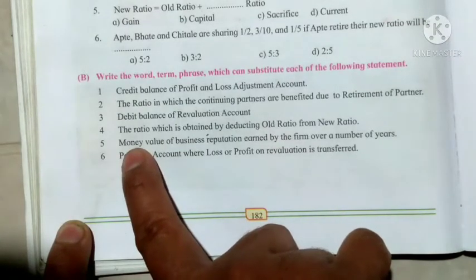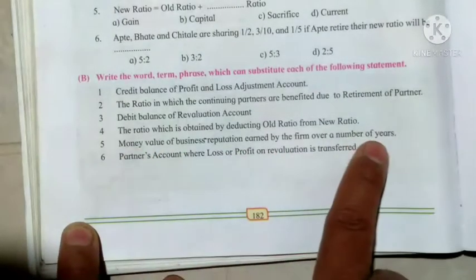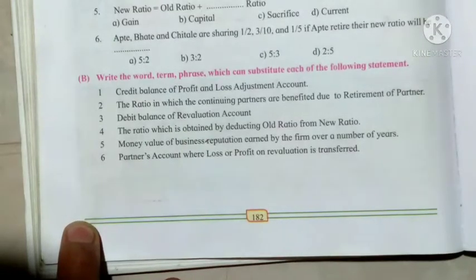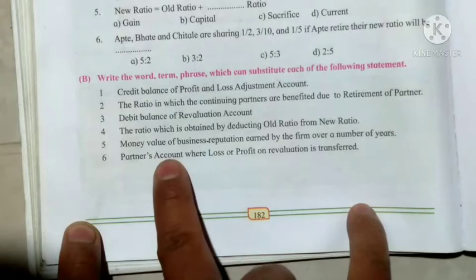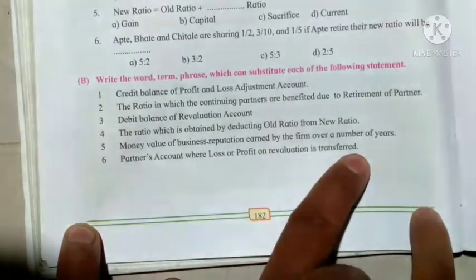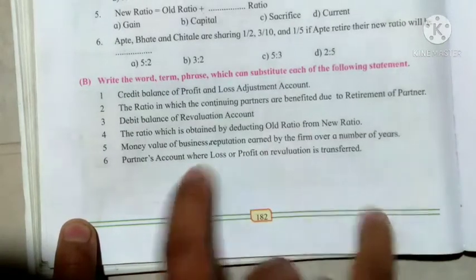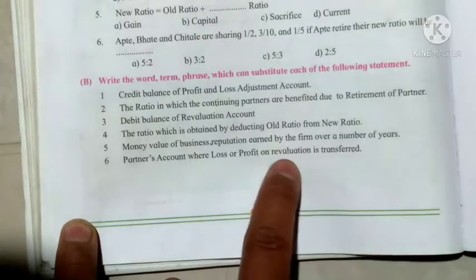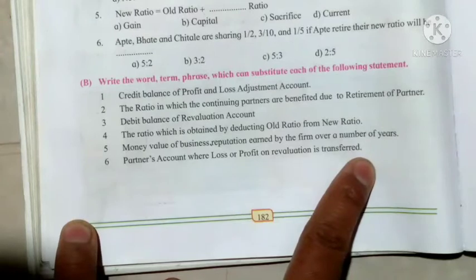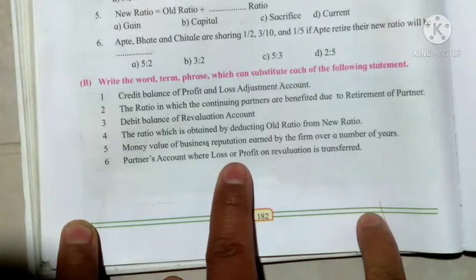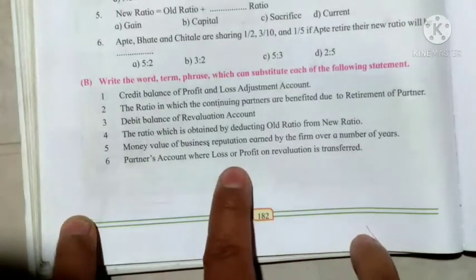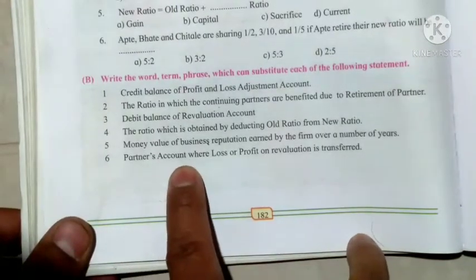Number 3: money value of the firm or money value of business is called goodwill. Number 4: the account where loss or profit on revaluation is transferred is the partners' capital account.